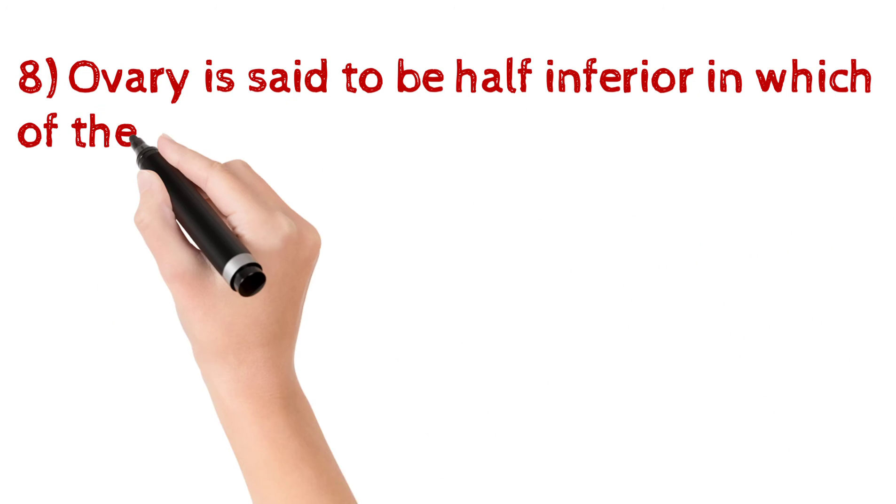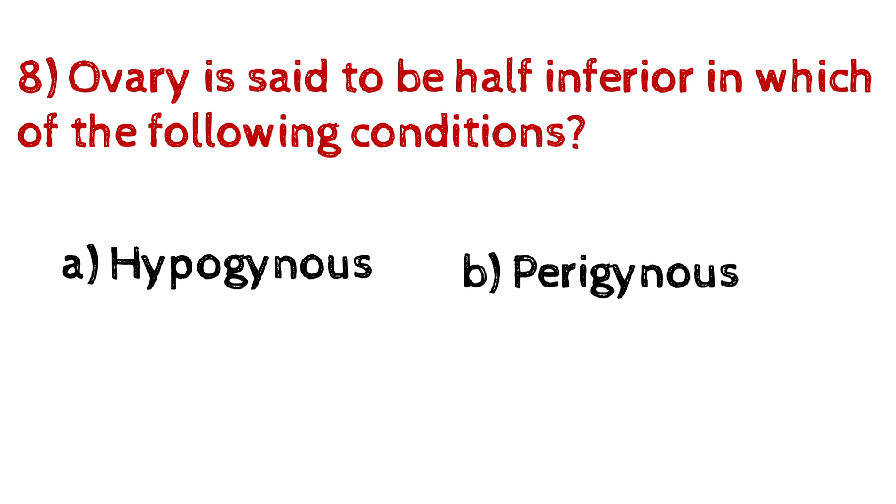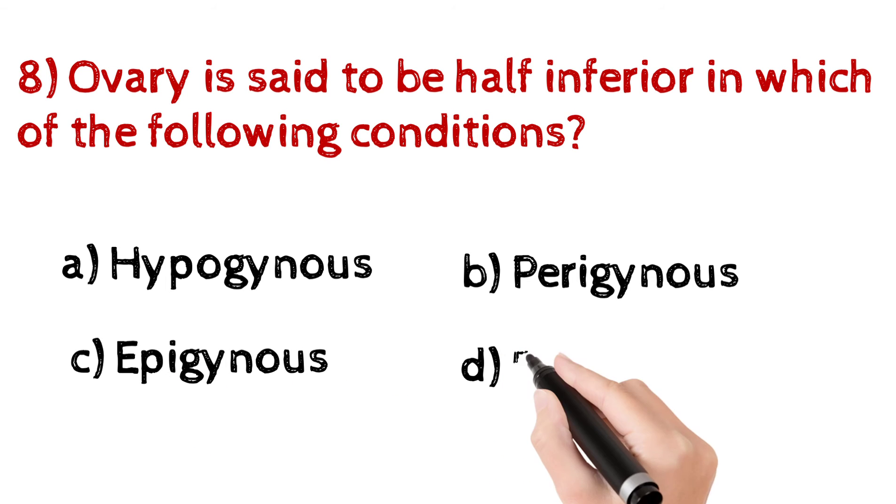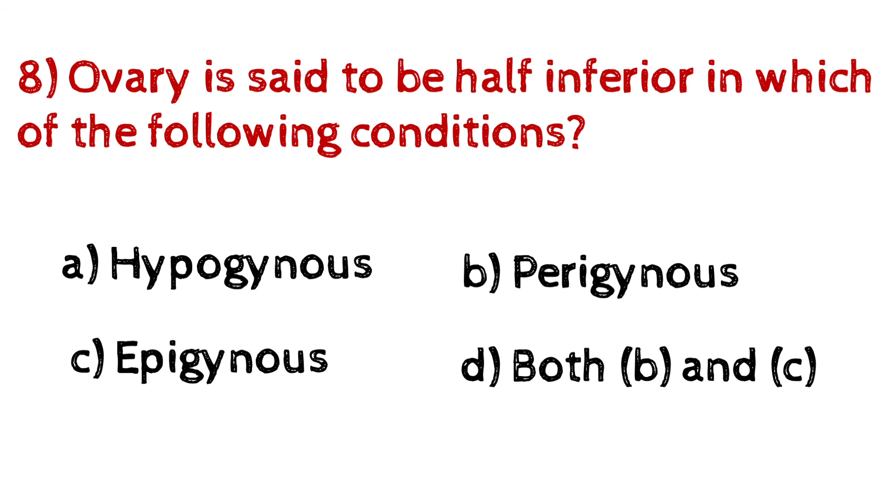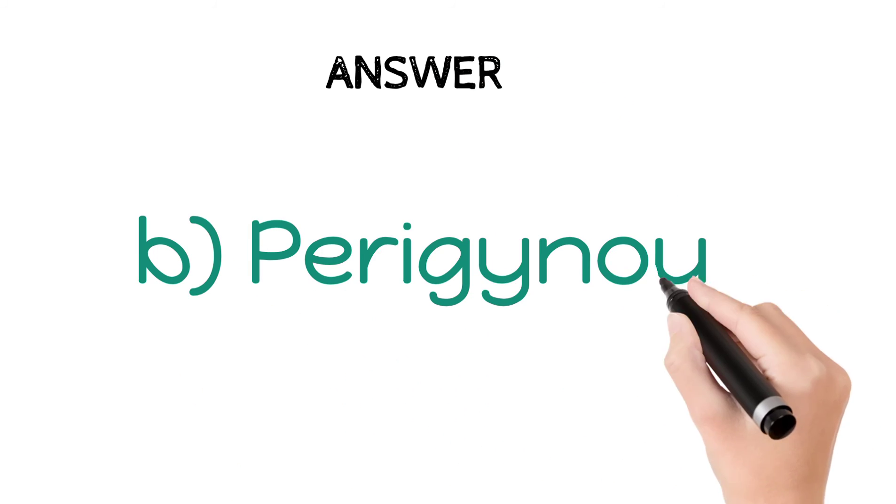Question number 8: Ovary is said to be half inferior in which of the following conditions? A. Hypogynous, B. Perigynous, C. Epigynous, D. Both B and C. And the answer is B, Perigynous.